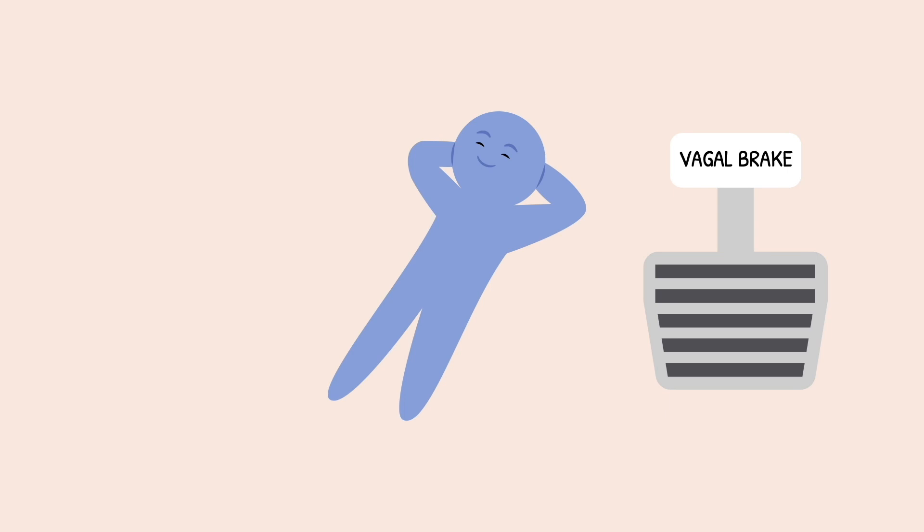It's part of your nervous system that can slow your heart rate, regulate your breathing, and help you stay connected and present, even in stressful situations. Today, we're diving into what the vagal brake is, why it matters, and how you can strengthen it to feel calmer and more in control.